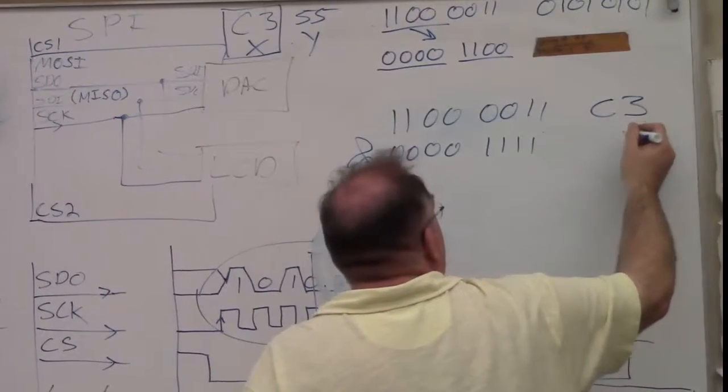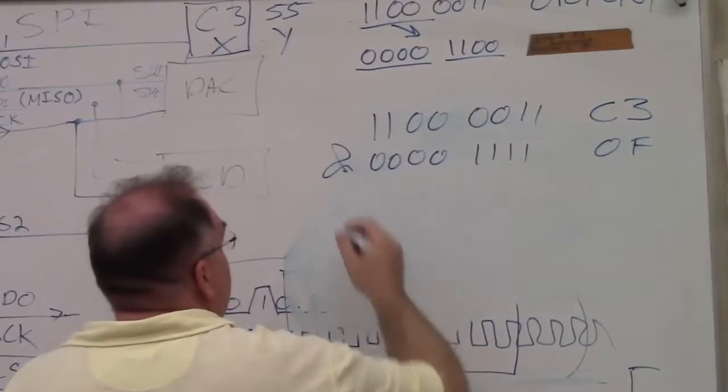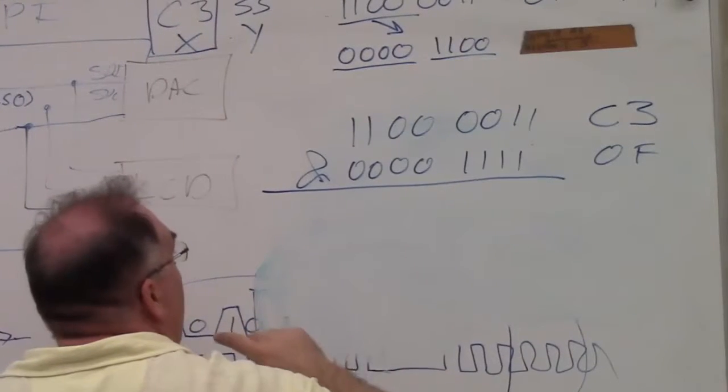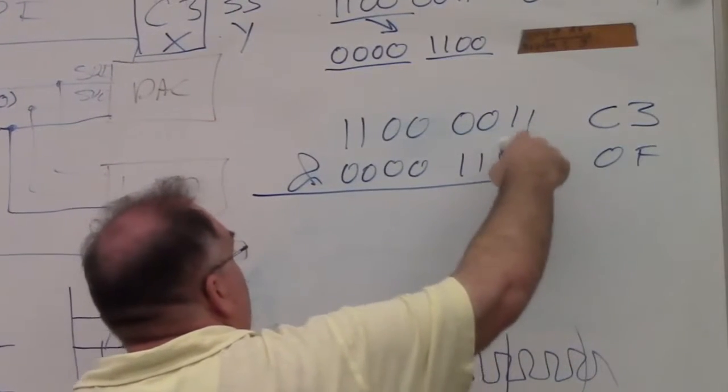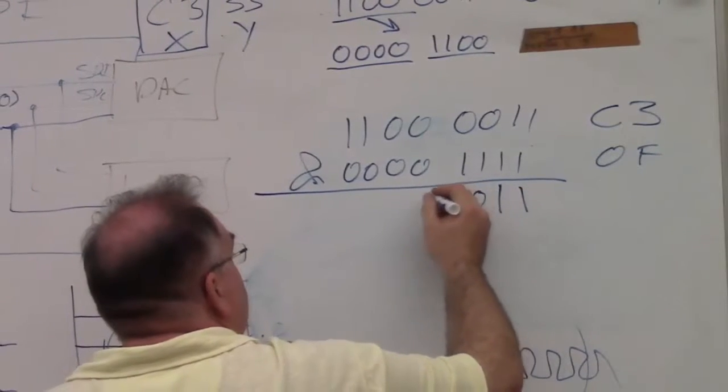I hope everybody can see this is C3 and this is 0, F. So when you do the logical and, you're getting 1 on the output when there's a 1 on both inputs. So you get a 1 here, a 1 here, and the rest are 0s.